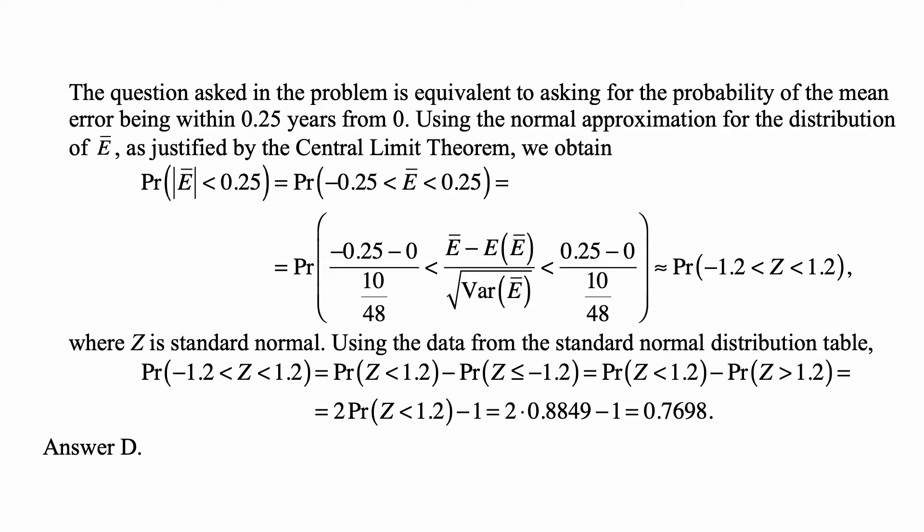And then we use the data from the table because this probability is equal to P(Z < 1.2) minus P(Z ≤ -1.2). But P(Z ≤ -1.2) equals P(Z > 1.2), because of the symmetry of the standard normal distribution. And P(Z > 1.2) equals 1 minus P(Z < 1.2). So what we have here is 2·P(Z < 1.2) minus 1. We look it up in the table, the probability of Z being less than 1.2 is 0.8849, and this becomes 2 times 0.8849 minus 1, and that's 0.7698, answer D.